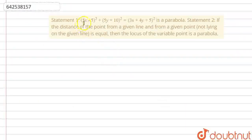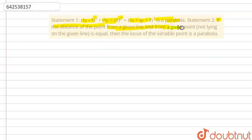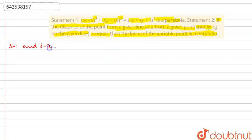Hello everyone. In this problem we are given Statement 1 which says that (5x − 5)² + (5y + 10)² = (3x + 4y + 5)² is a parabola. And Statement 2 says that if the distance of a point from a given line and from a given point not lying on the given line is equal, then the locus of the variable point is a parabola. We have to determine which of them are correct, both correct, or both wrong.